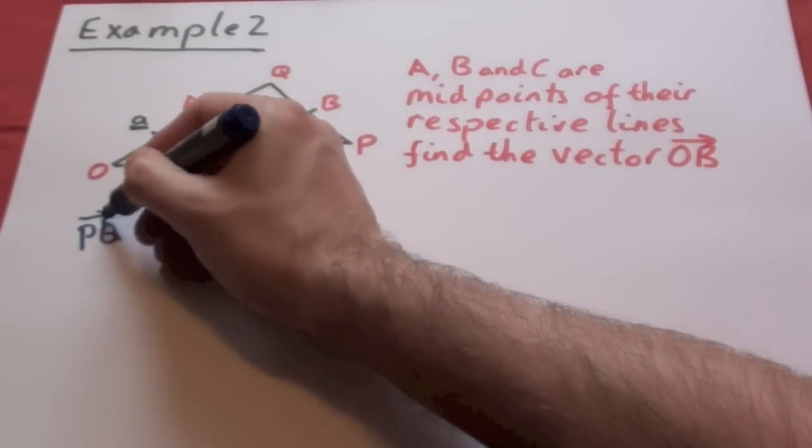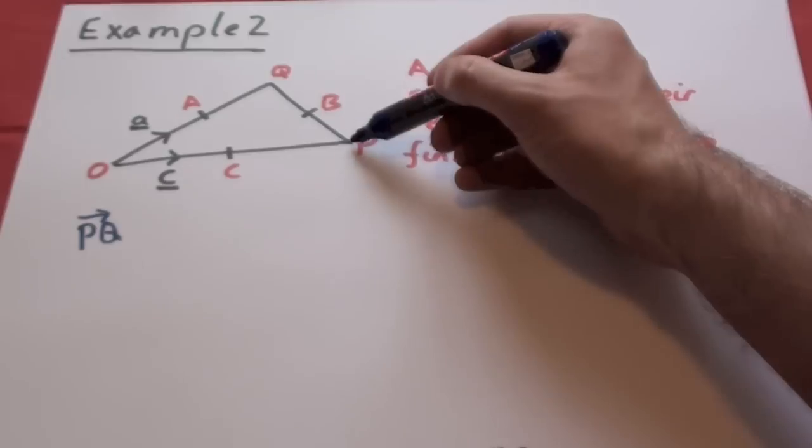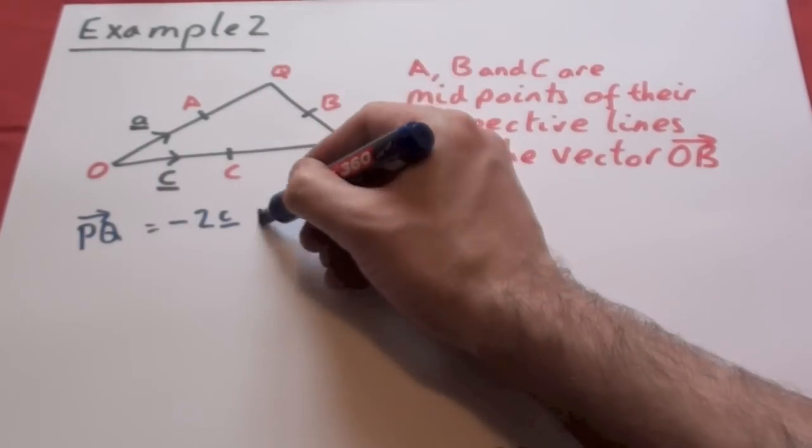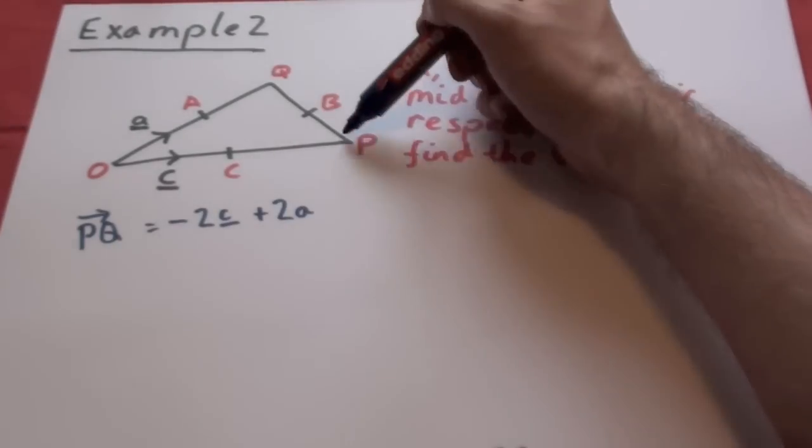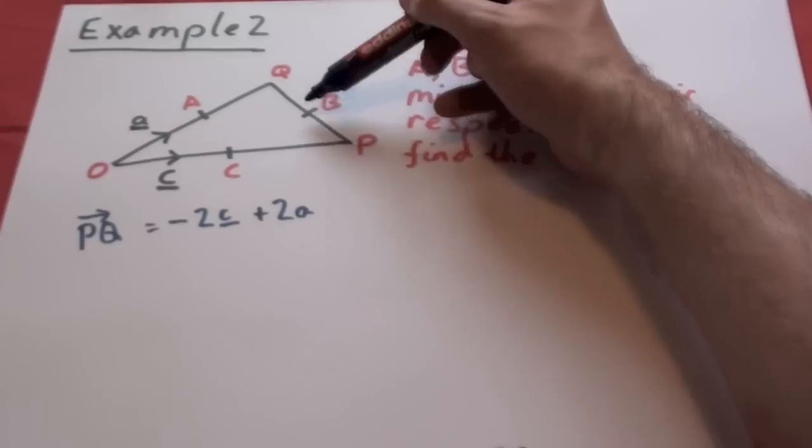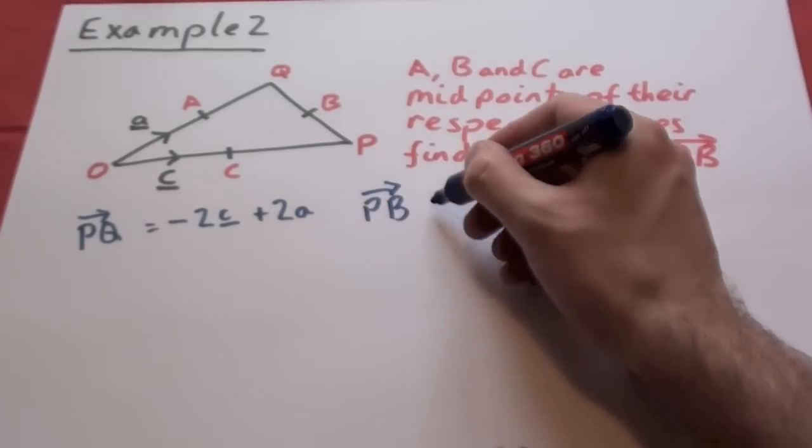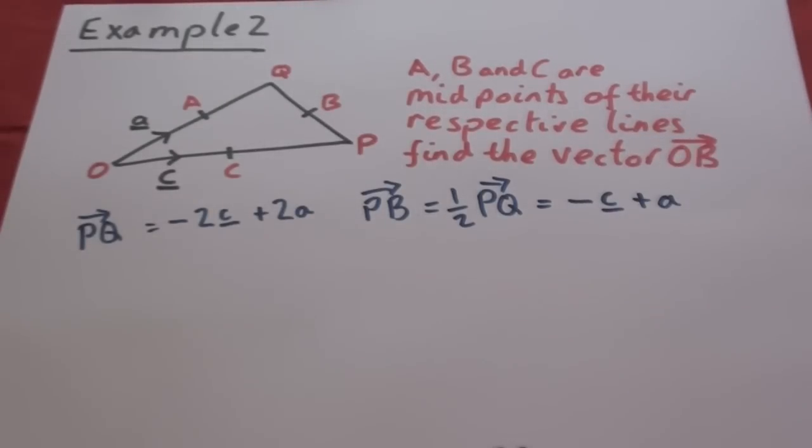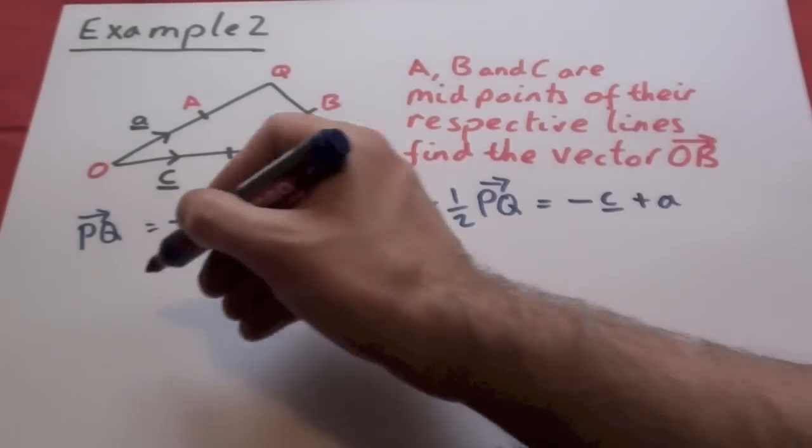So first of all let's work out what P, Q is. We have to go backwards on ourselves so that's minus 2C and plus 2A. Since we only want half of it, P to B is just half of that which is minus C plus A.